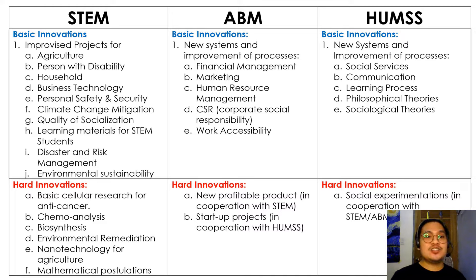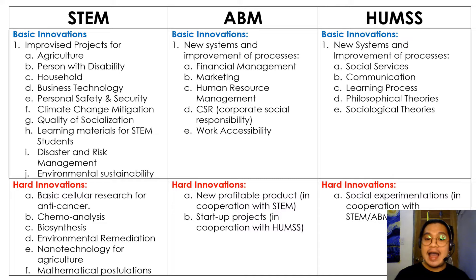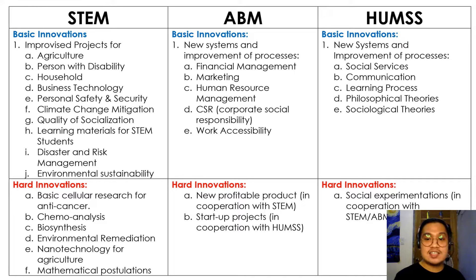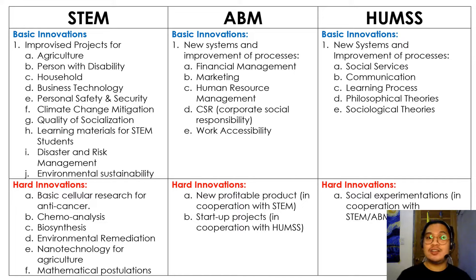For ABM, basic innovation covers new systems and improvement of processes such as financial management, marketing, human resource management, corporate social responsibility, or work accessibility. For hard innovation, ABM students need to develop new profitable products in cooperation with STEM, or startup projects also known as business simulations, and they can also cooperate with UMES students. For UMES, basic innovation covers new systems and improvement of processes such as social services, communication, learning processes, philosophical theories, and sociological theories. For hard innovation, UMES can create different social experiments in cooperation with STEM or ABM to study socialization and societal progress.